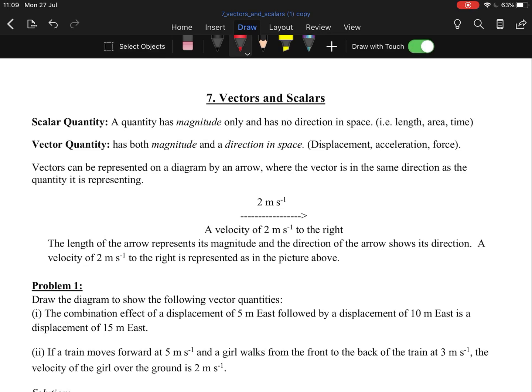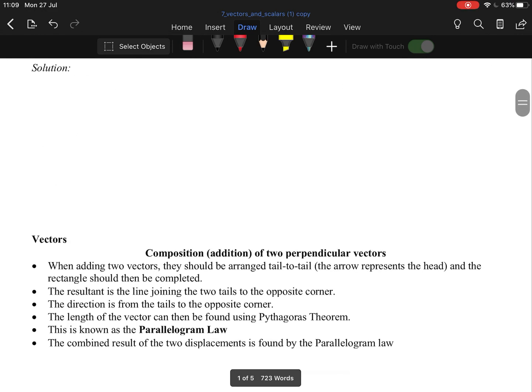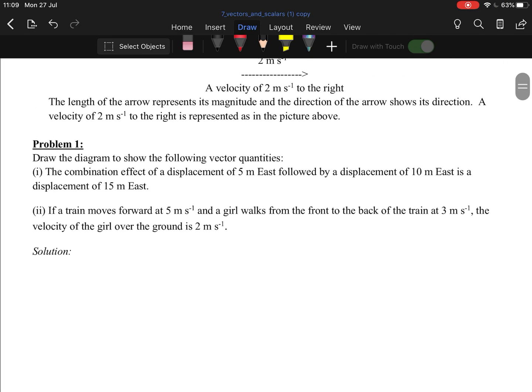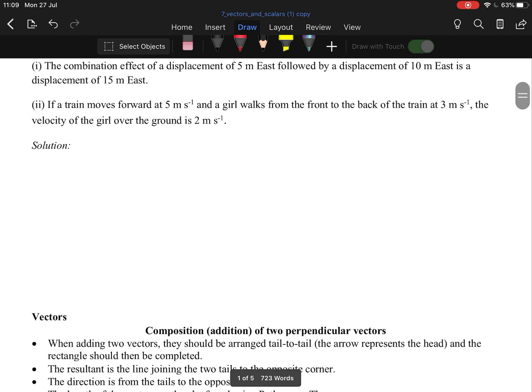So the first thing is your scalar and your vector. A scalar has magnitude, things like length, area, time. A vector has to have a direction as well as magnitude, so displacement, acceleration, force. So 200 meters per second is a scalar. 200 meters per second north is a vector. What we're going to deal with here, you don't really need to know that. That's kind of junior cert science, basic math stuff.